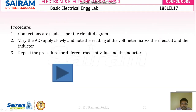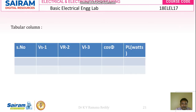Looking at the procedure, the connections are made as per the circuit diagram. The supply voltage is varied slowly to meet the rated voltage and readings are taken across the 3 voltmeters and 1 ammeter. This procedure is repeated for different voltages to find the unknown resistance and inductance values. In the tabular column, we tabulate voltmeter 1, voltmeter 2, and voltmeter 3 readings, and then calculate the power factor and power across the load.